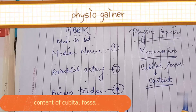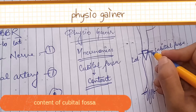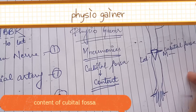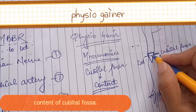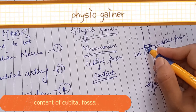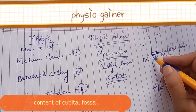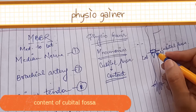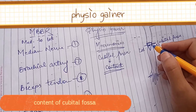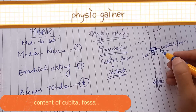One more trick: the medial side — inner border — medial nerve is here on the medial side. Brachial artery is here — we put a stethoscope to auscultate the brachial artery.